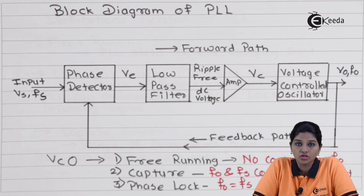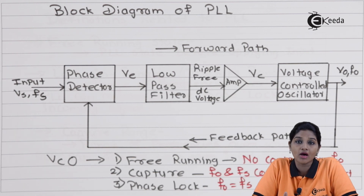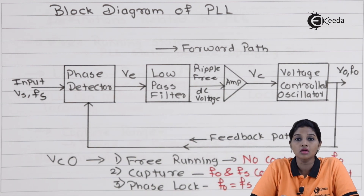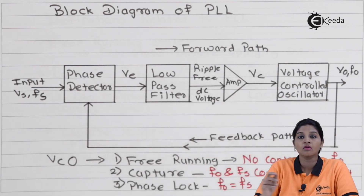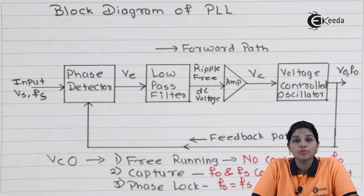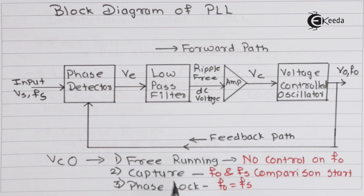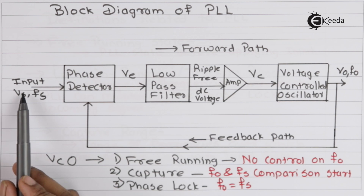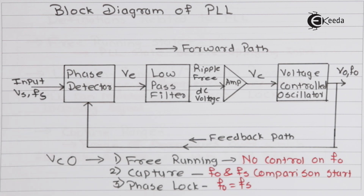The control voltage VC is applied to the next block: the voltage control oscillator. The voltage control oscillator is basically an electronic circuit in which the output frequency varies according to the input voltage. Here the output frequency FO changes as per the control voltage VC. The voltage control oscillator provides three states of operation: free running state, capture state, and phase lock state.